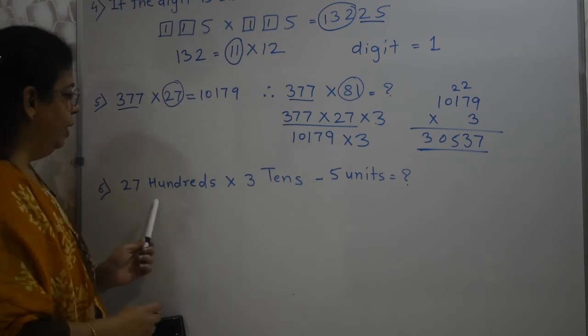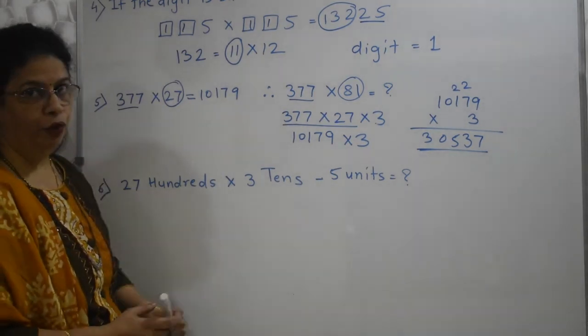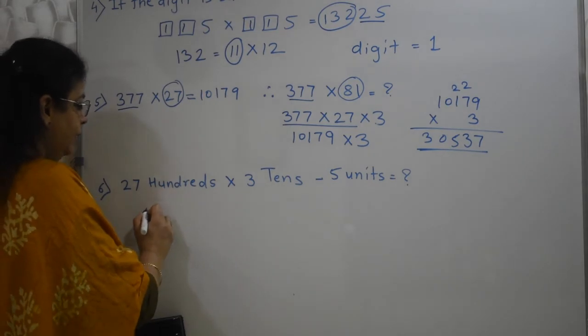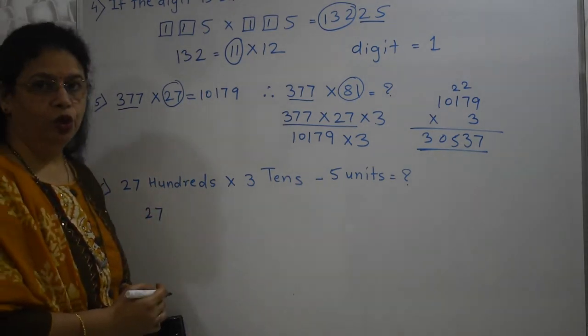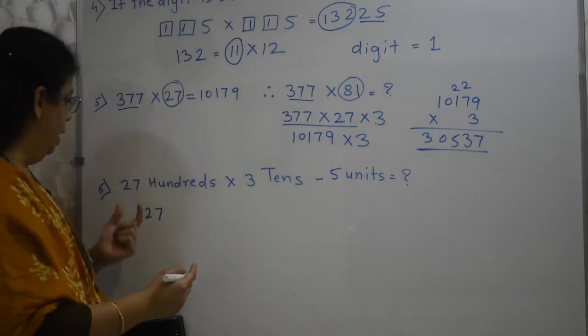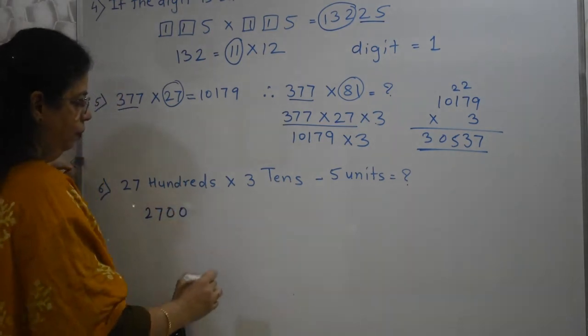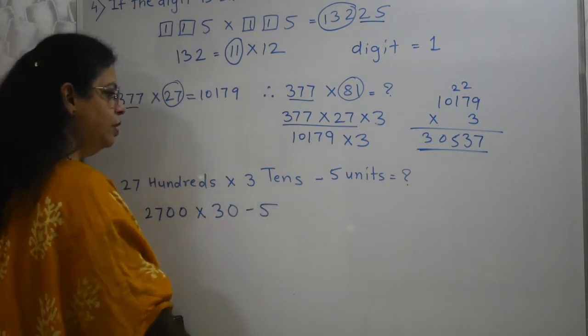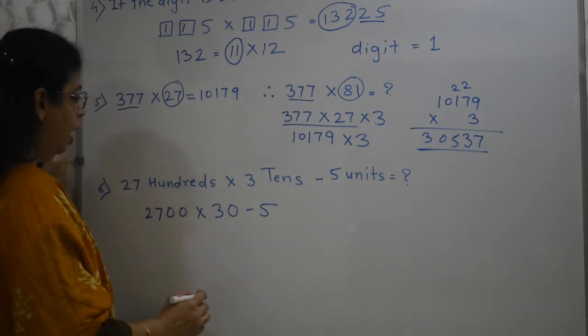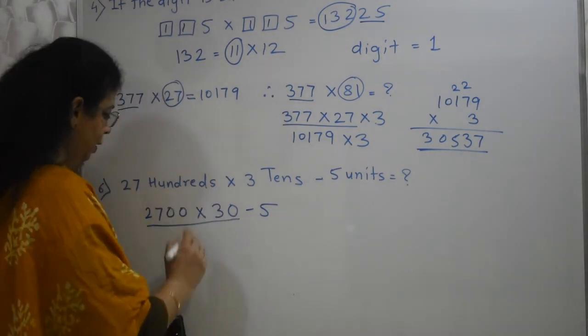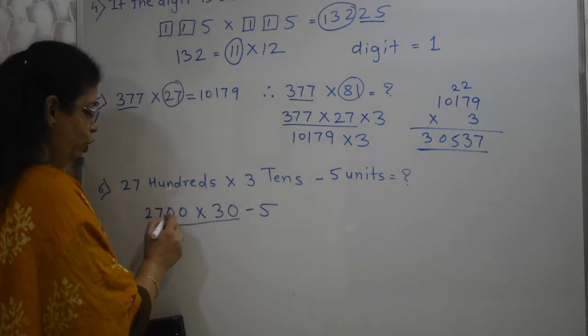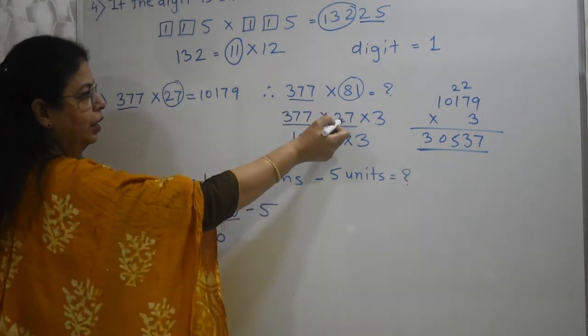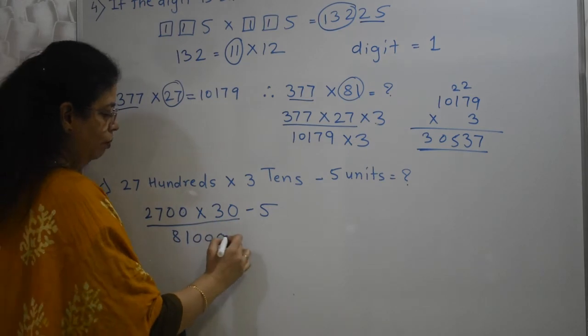Now, here comes the last one. 27 hundredths into 3 tens minus 5 units. First, we should write in the form of international numerals. 27 hundredths. 100 means how many 0? 2 0s. 27 hundredths mean 27 and 2 0s. Into 3 tens. Tens means 1 0. So, 3 and 1 0. Minus 5 units. Units means single one digit number. Now, as per the Bodmas rule, first, of course, we have to do this. 27 into 3. I have told you, first you take care of 0s. 1, 2, 3. So 1, 2, 3. Then, 27 into 3. What we have done earlier? See here? 27 into 3 is 81. So, 81,000 minus 5.